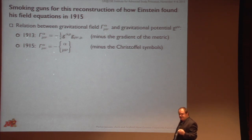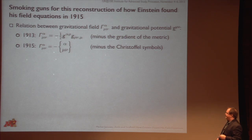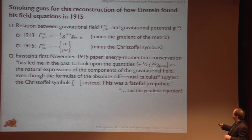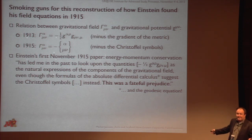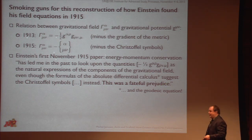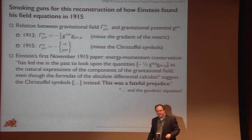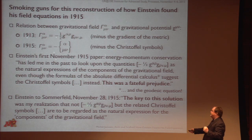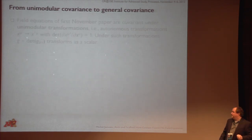So what is our evidence that this is what happened? Our smoking guns are really two remarks Einstein makes. The first is in the November 1915 paper, where he says: 'Energy-momentum conservation has led me in the past to look upon the gradient of the metric as the gravitational field, even though the formulas of the absolute differential calculus — and one may add the geodesic equation — suggest that the Christoffel symbols should be that. This was a fateful prejudice.' And then writing to Sommerfeld about these developments in November, after the dust settles, he says: 'The key to the solution was my realization that not the gradient of the metric but the Christoffel symbols are going to be the gravitational field.'